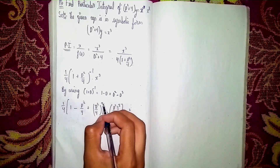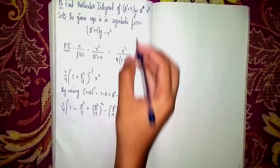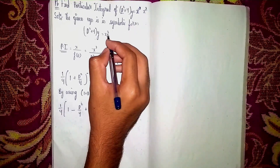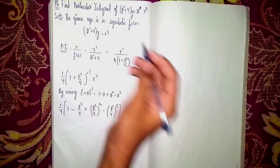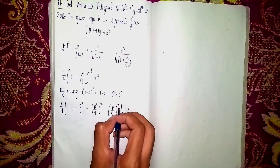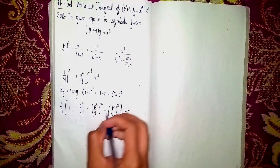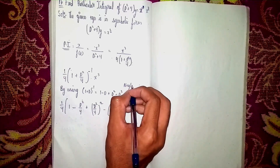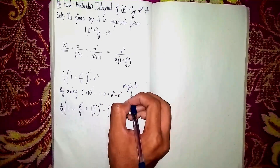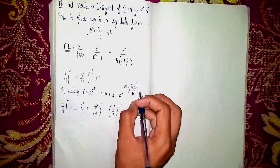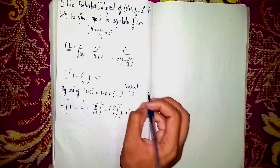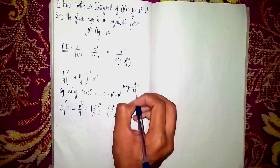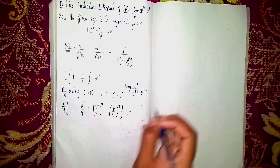Why are we neglecting? Because our highest power term is x³, so we only need up to D³. The term (D²/4)² becomes power 4, and (D²/4)³ becomes power 8. So we neglect D⁴ and D⁸ terms. Nothing will happen from those terms.